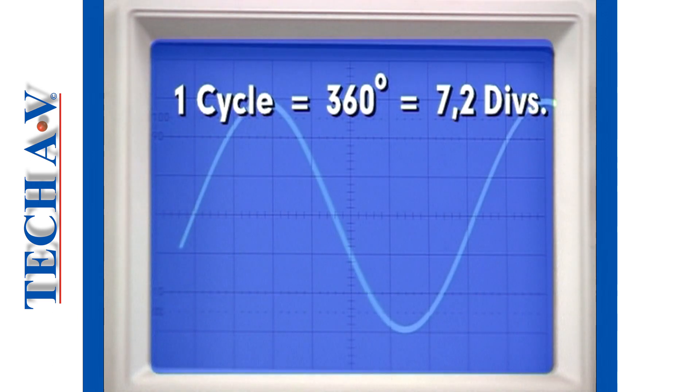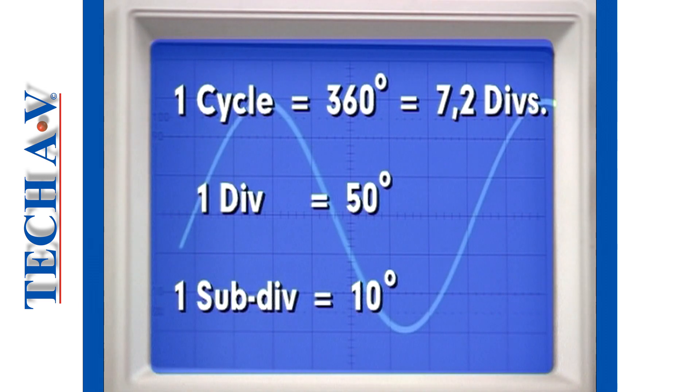Note that one cycle of a waveform represents a 360 degree period and 7.2 divisions equals one period or 360 degrees. It follows that each division then represents 50 degrees and each subdivision is equal to 10 degrees.